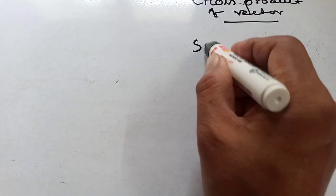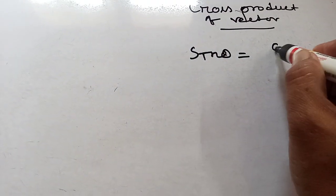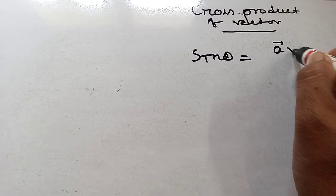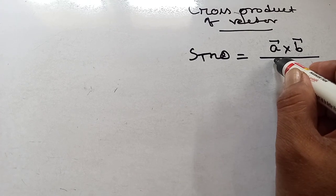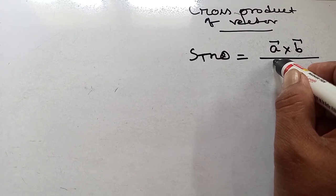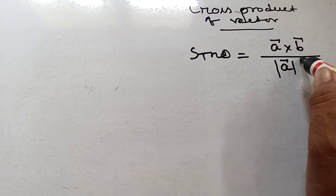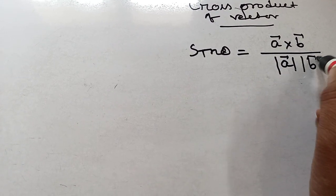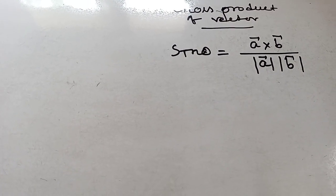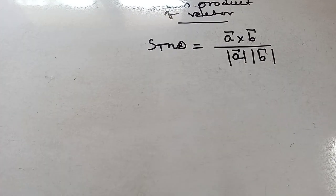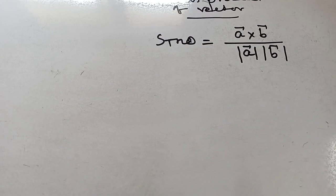sin theta equal to a vector cross b vector by mod of a vector into mod of b vector. sin theta equal to a cross b by mod of a into mod of b.